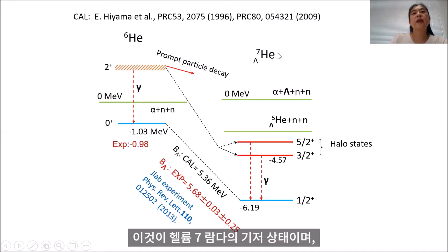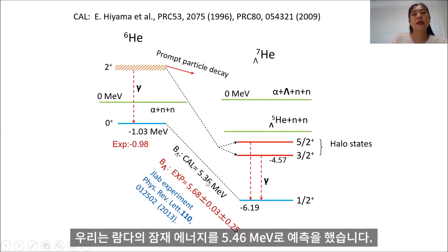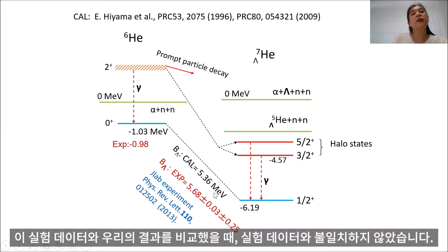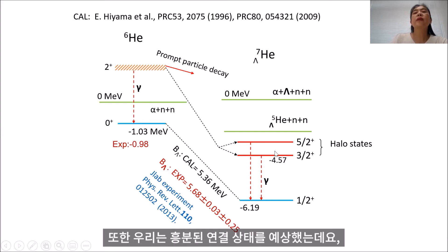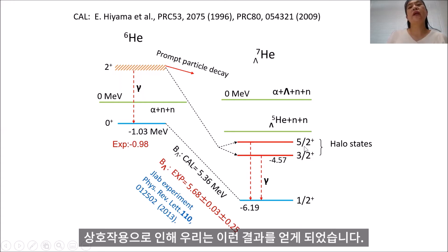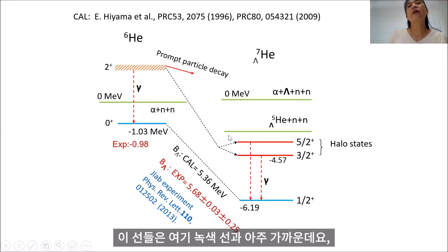This is the ground state of Helium-7-lambda, and we predict the lambda separation energy to be 5.636 MeV. Recently, they observed the lambda separation energy, and our result is not inconsistent with the experimental data. We also predict an excited bound state, which is composed of the 2+ state of Helium-6 plus lambda in the 0s orbit. Due to the spin-spin interaction, we obtain this state, and this red line is very close to the green neutron decay threshold. We predict a bound state of Helium-7-lambda right here.